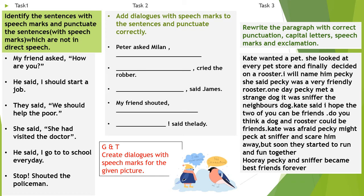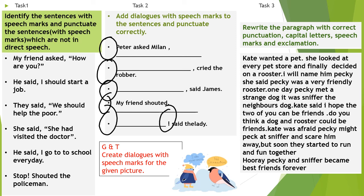Here is your task. Identify the sentences with speech marks and punctuate the sentences which are not correctly written in direct speech. First, identify the sentences with the speech marks, then place the correct punctuation or speech marks. Task 2: add dialogues with speech marks to the sentence and punctuate correctly. You have to write your own dialogues and punctuate the sentences correctly. Peter asked Milan — write the dialogue inside the inverted commas. Dash cried the robber. Dash said James. My friend shouted — here you can find an exclamation, so you have to add an exclamatory sentence.